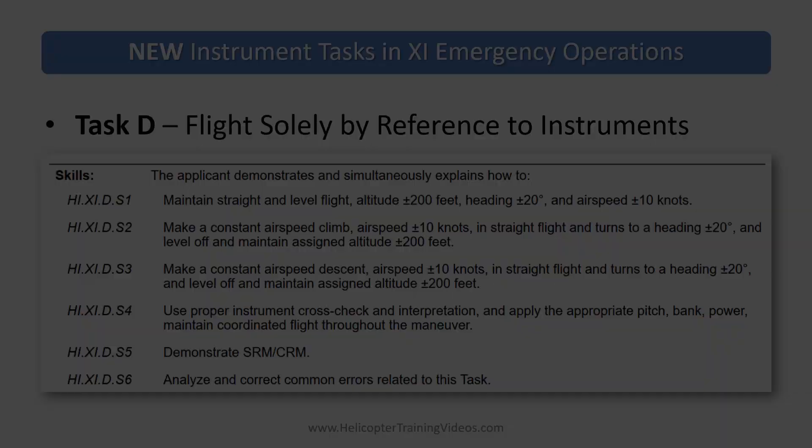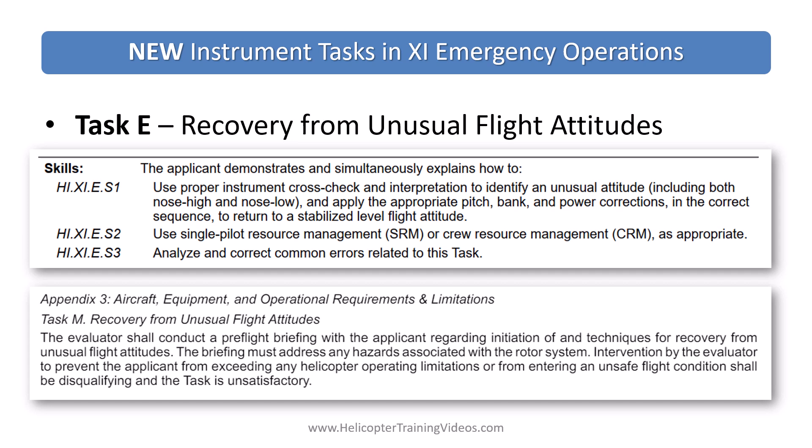I think it's a good thing though. Having attitude indicators in aircraft that may be used especially for night training and may potentially find themselves in inadvertent IMC — I think that's going to increase safety across the fleet. The next new task, under the emergency operations area of operations, is recovery from unusual flight attitudes. If you've done your instrument training, this is pretty straightforward. Of course the difference is here you're teaching it. There's also a reference to Appendix 3, which talks about making sure we don't do anything like a pushover or heavy aft cyclic that could overspeed the rotor system.